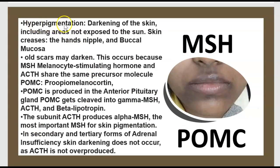Hyperpigmentation involves darkening of the skin, including areas not exposed to the sun — the creases of the hands, nipples, and buccal mucosa; all scars may also darken. This occurs because MSH (melanocyte-stimulating hormone) and ACTH share the same precursor molecule, POMC (pro-opiomelanocortin). POMC is produced in the anterior pituitary and cleaved into gamma-MSH, ACTH, and beta-lipotropin. The ACTH subunit produces alpha-MSH, the most important MSH for skin pigmentation. In secondary and tertiary adrenal insufficiency, skin darkening does not occur, as ACTH is not overproduced.